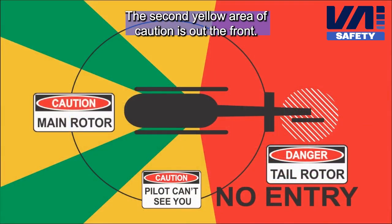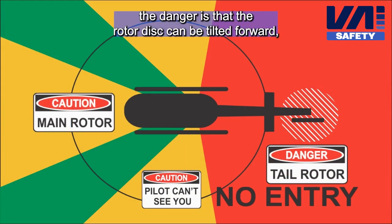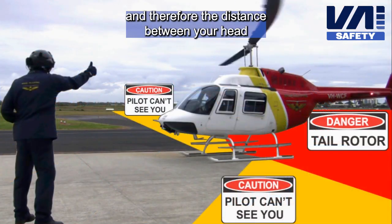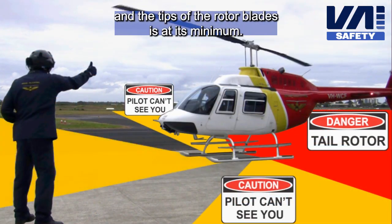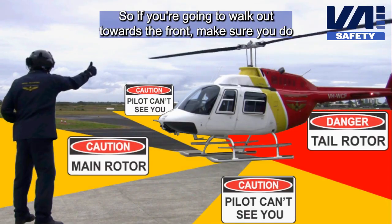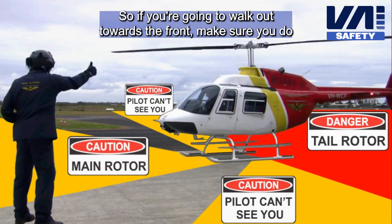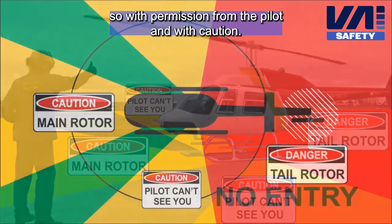The second yellow area of caution is out the front. Although the pilot can see you fine, the danger is that the rotor disc can be tilted forward, and therefore the distance between your head and the tips of the rotor blades is at its minimum. So if you're going to walk out towards the front, make sure you do so with permission from the pilot and with caution.